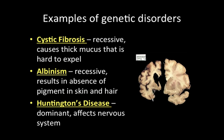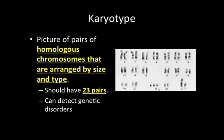We can actually detect a lot of genetic disorders. We can detect whether you have a chance of having an offspring with a particular genetic disorder. Using biotechnology, we're able to predict whether offspring will or will not have a genetic disorder. One way we can detect genetic disorders is by karyotyping — a karyotype is a picture of homologous chromosomes arranged by size and type. Here on the right is a partial karyotype of a human; we should have 23 pairs of chromosomes. We can detect certain genetic disorders by looking at the chromosomes and making sure that they match up.